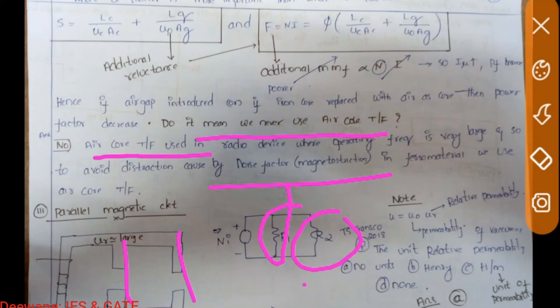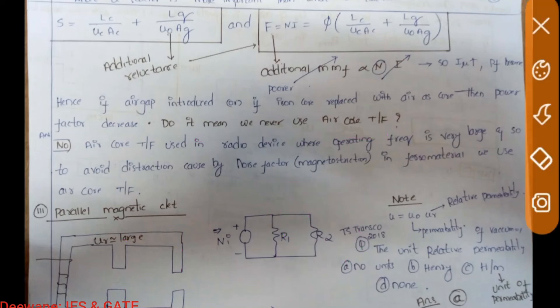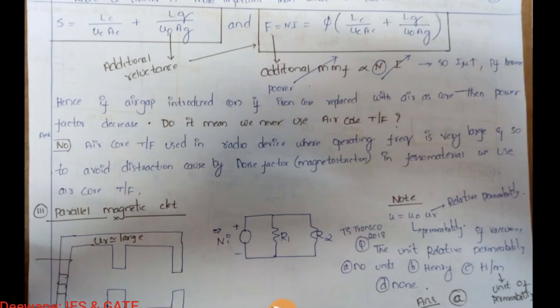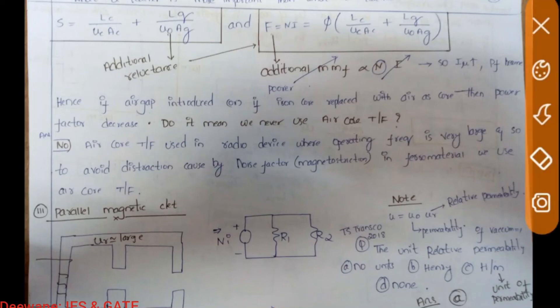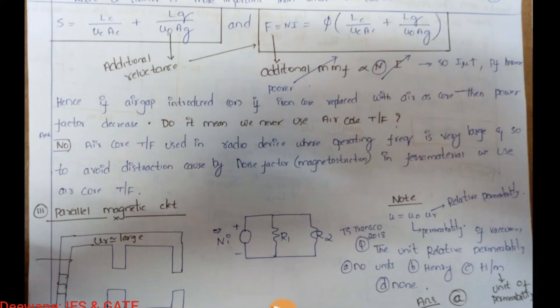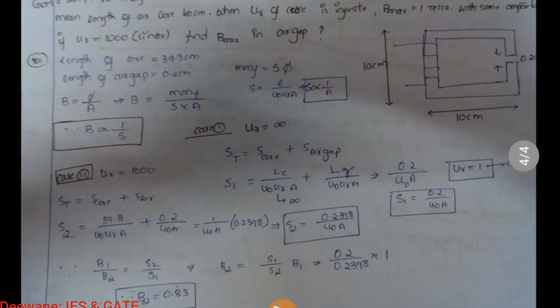A question was asked in the TS TRANSCO AE exam in 2018: what is the unit of relative permeability? The answer is no units, because μᵣ = μ/μ₀ — it is a ratio. The unit of permeance is Henry. These are basic terms you should know.